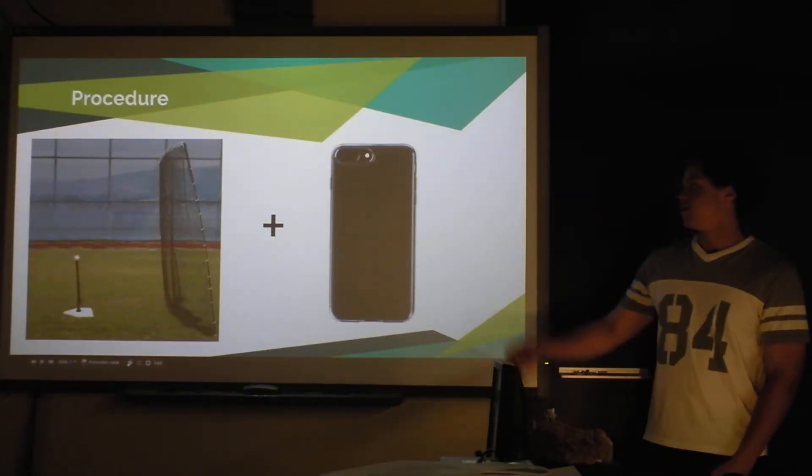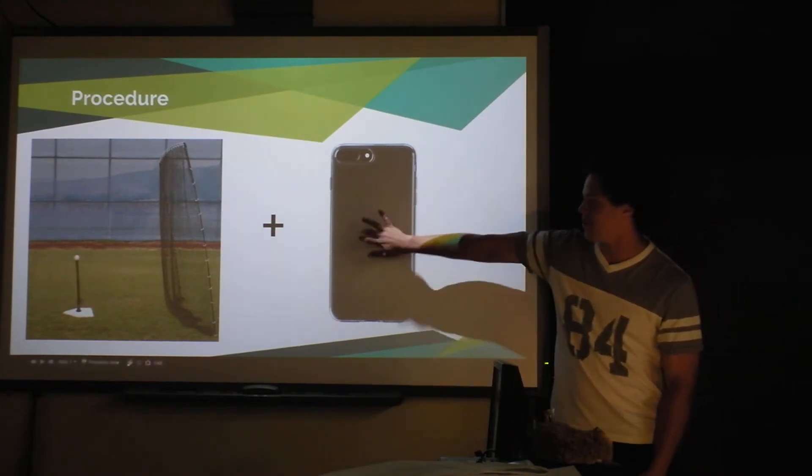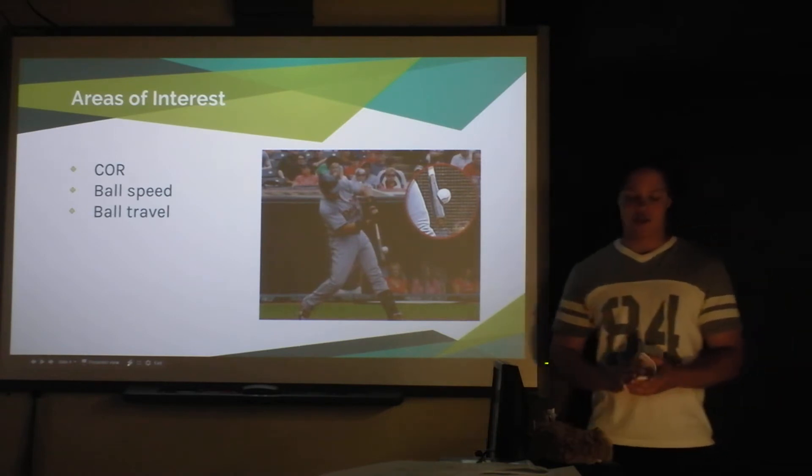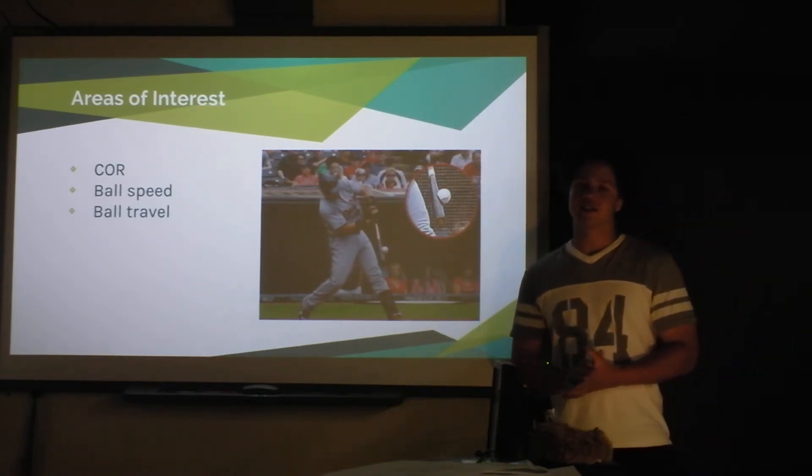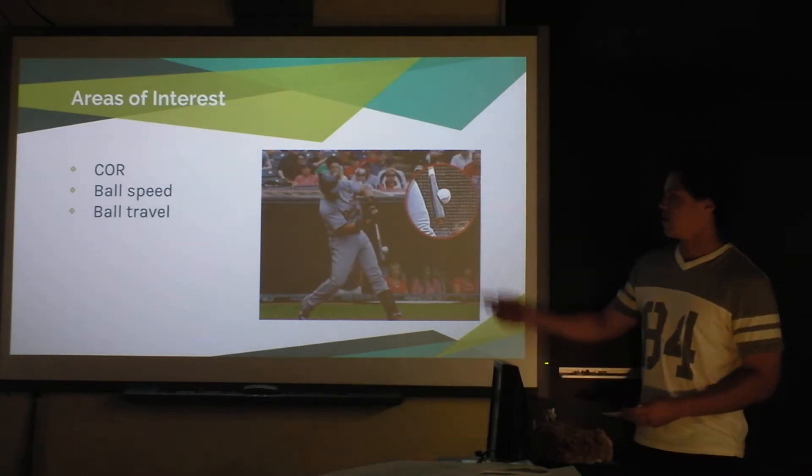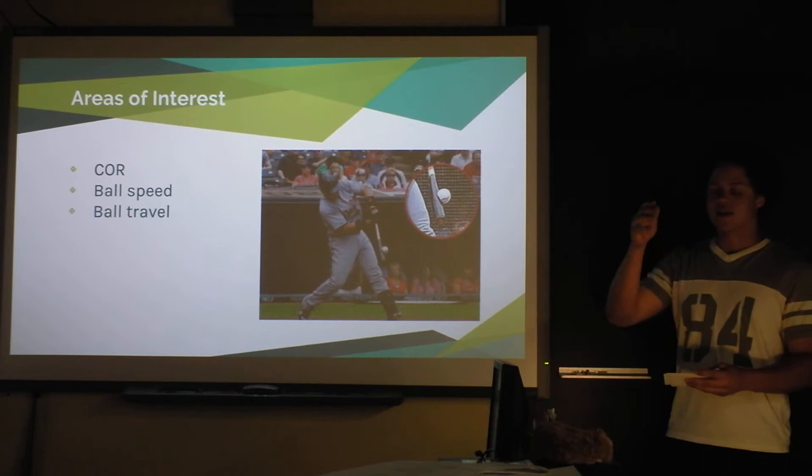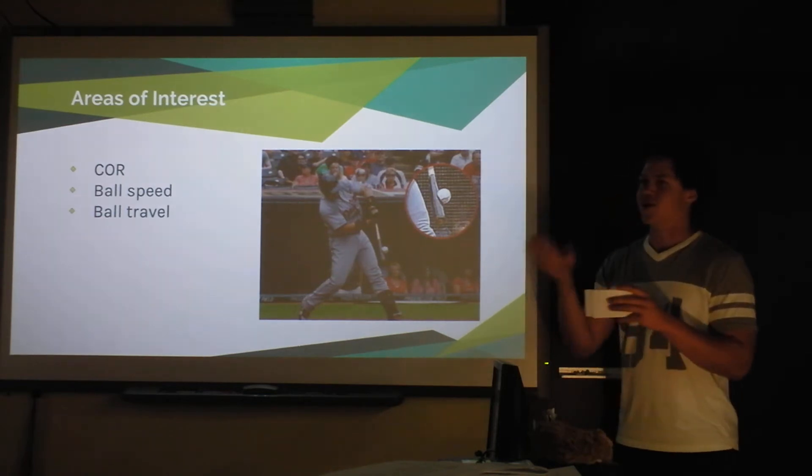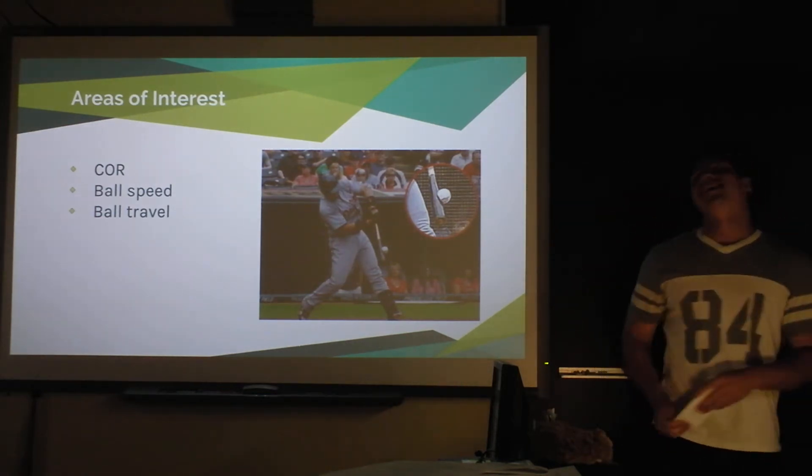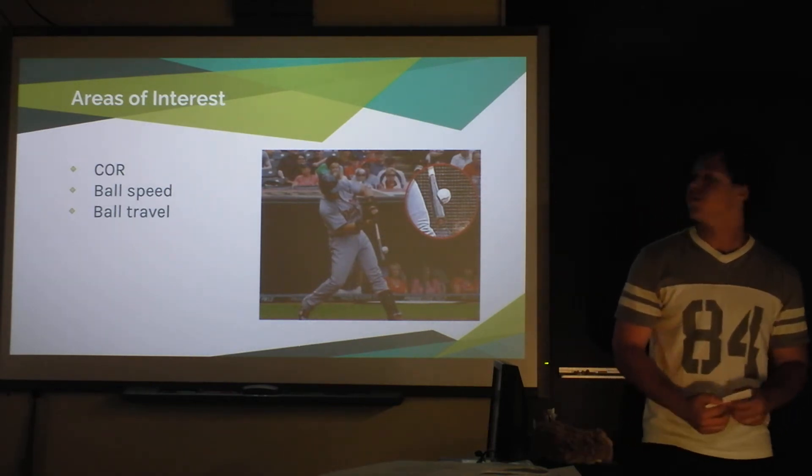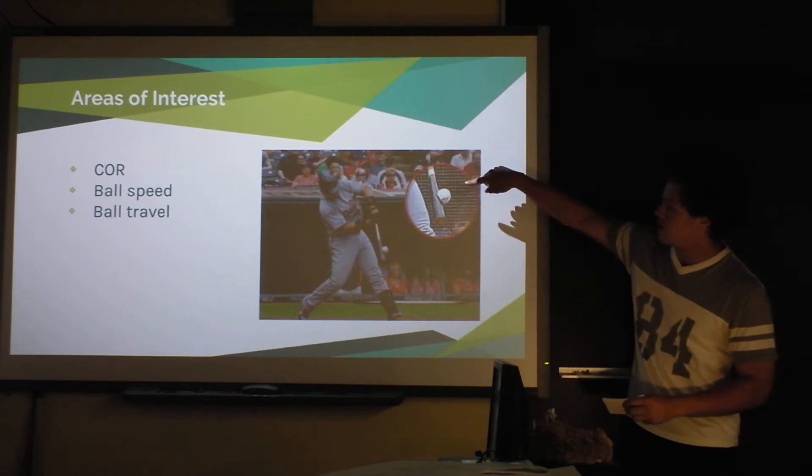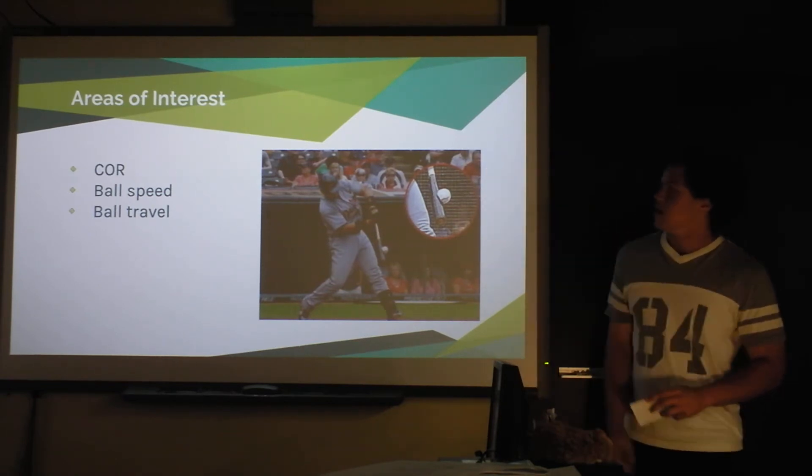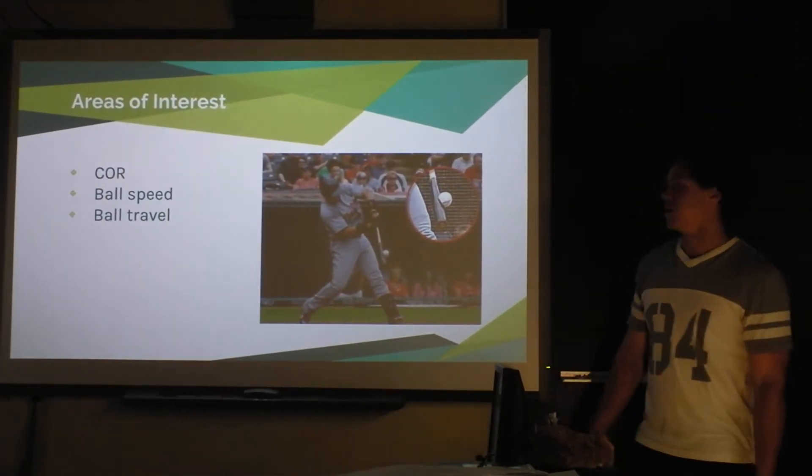So my procedure, you just get a phone, record it, swing your bat. Areas of interest: the coefficient of restitution, because in any collision that's important, and obviously this is a collision. You don't notice it because it's quick, but hitting a baseball with a baseball bat is extremely quick. It's one-third of the blink of an eye. So you don't see it, but when you slow it down, you can see that, and that's kind of crazy. I found how fast the ball came off the bat, and I also found how far the ball would travel if it's at some certain angle.